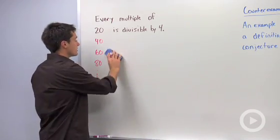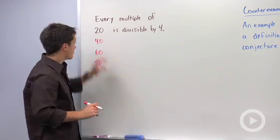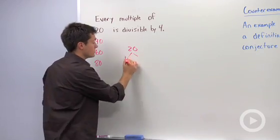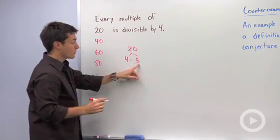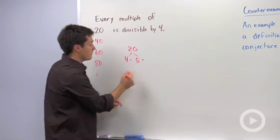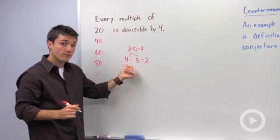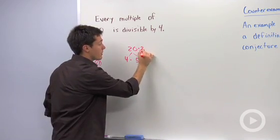And the reason why these are all divisible by 4 is because if we look at 20, if I break it down into its factors, I could write 20 as 4 times 5. So if I multiply 20 by 2, then notice I'm going to have 4 as a factor.